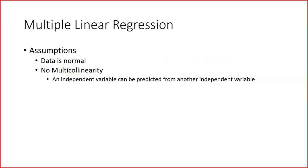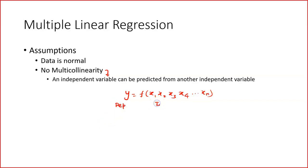So what is this multicollinearity? Multicollinearity means an independent variable can be predicted from another independent variable. For example, we have y equals x1, x2, x3, x4, and so on up to xn. Here y is the dependent variable and all the x's are independent variables. If I can predict x3 from x4, that means there is a relationship between x3 and x4. One of the assumptions in regression is there should not be any relationships whatsoever between independent variables.